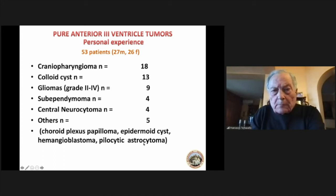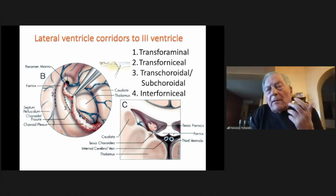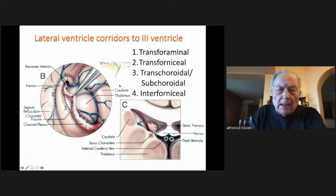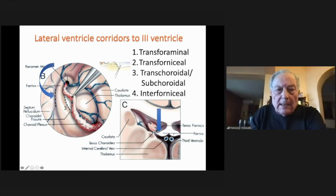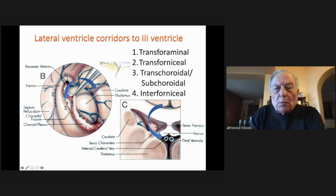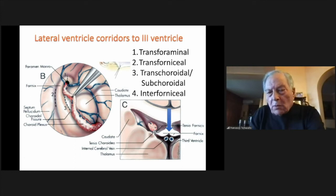The corridors we commonly use to access the third ventricle are: first, the transforaminal approach, which is important especially when we have ventricular dilatation; second, the subchoroidal approach, to allow access also to the roof of the third ventricle; and third, the interfornicial approach, to reach the roof of the third ventricle.